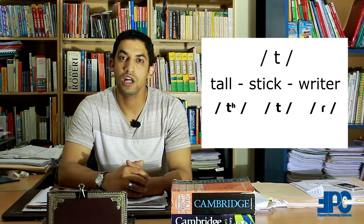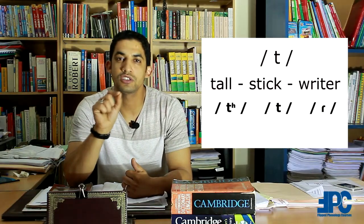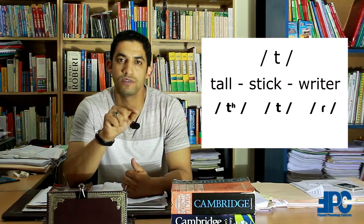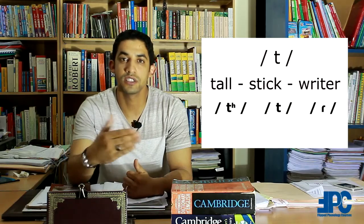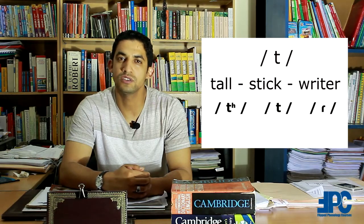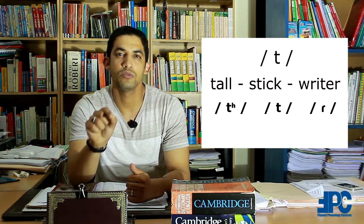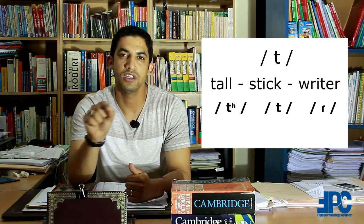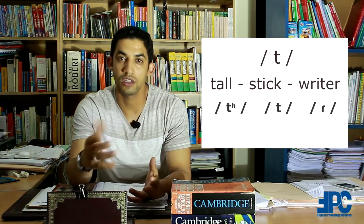We say these sounds are in complementary distribution. The aspirated /t/ is always found in the initial position of a word. The unaspirated /t/ is always found after the sound /s/. The flapped /r/ is always found between two vowels, where the first is stressed and the second is unstressed. So these three sounds occur in different environments — they are in complementary distribution — and we say they are allophones of the same phoneme /t/. They do not change meaning but are just different articulations of the same sound.